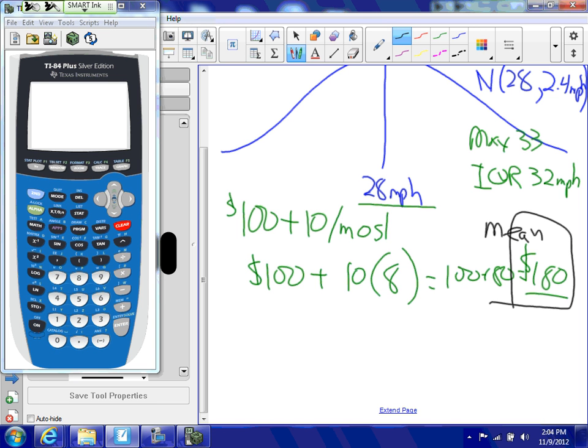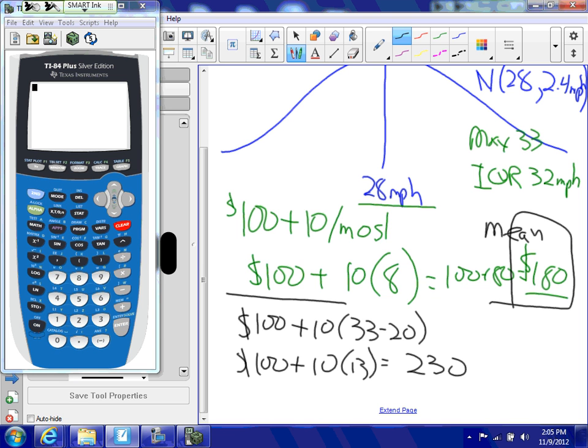Well, they told us the maximum is 33 miles per hour. So I'd have $100 plus 10 times 33 minus 20, because 20 was my speed limit. So it would be $100 plus 10 times 13. So that's going to give us $230. That's going to be the ticket for the maximum speed limit violation.